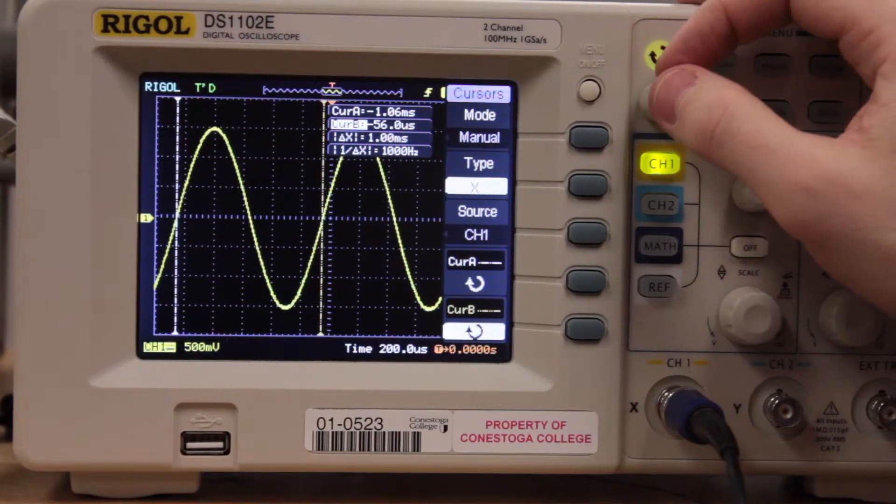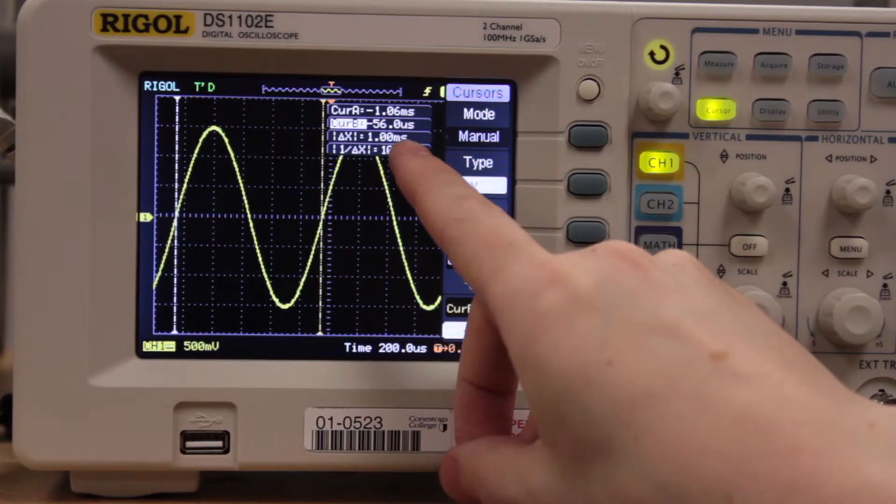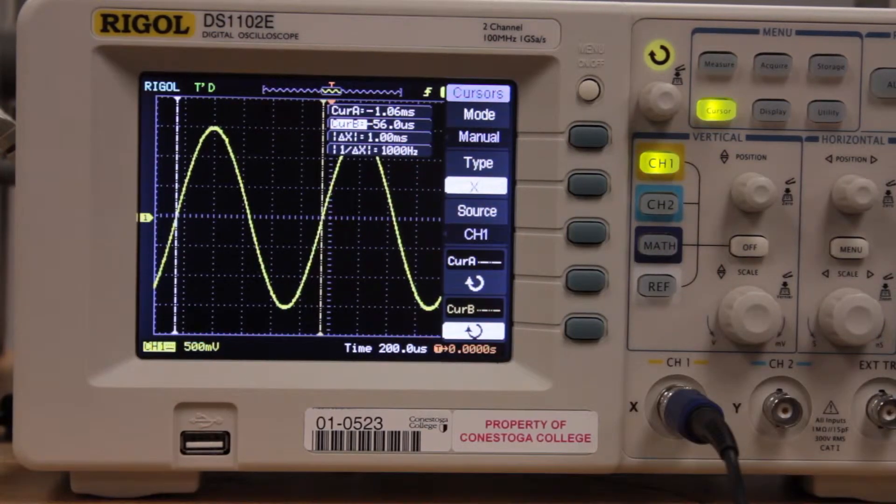And by zooming in we get a higher resolution which allows us to measure more accurately. So here we can see that we have exactly 1 millisecond. There's no rounding error on the scope because we're zoomed in closer.